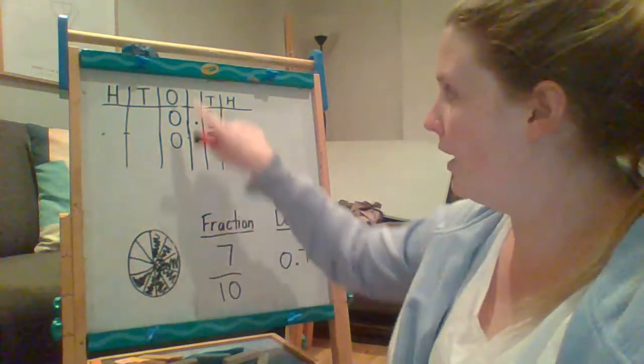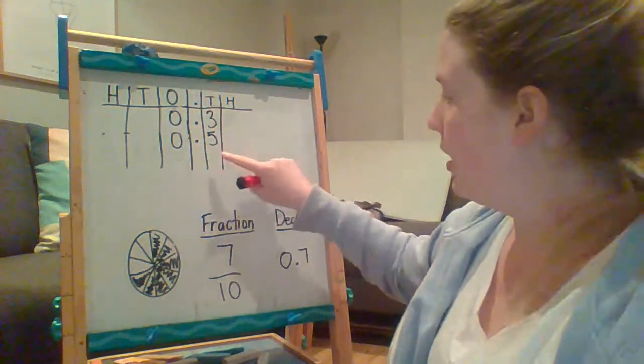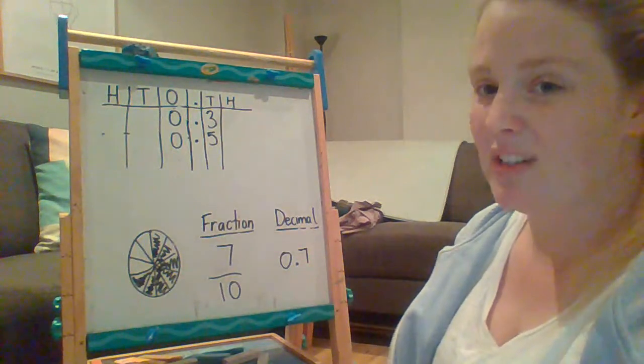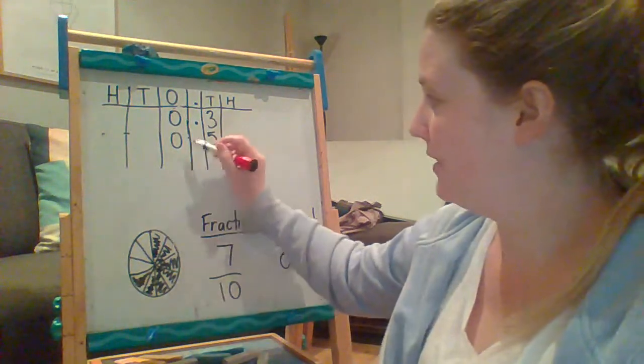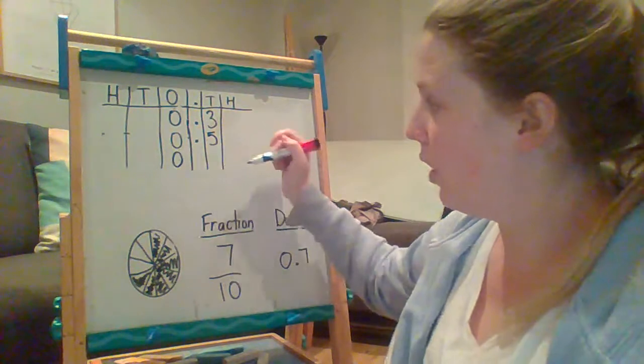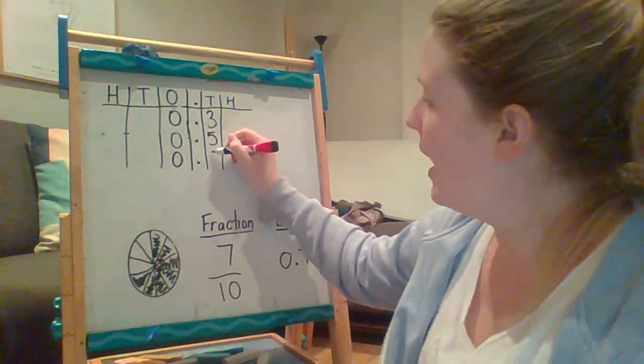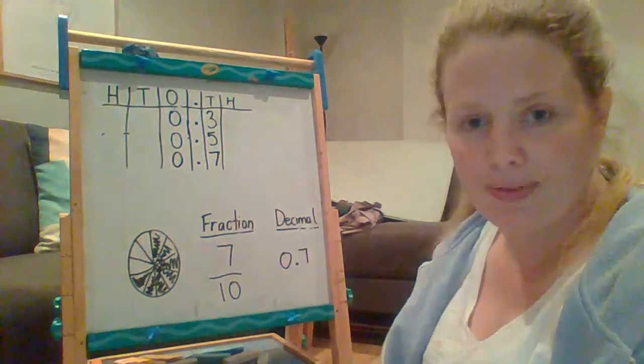So I don't have a whole one here, but I do have part of one. I've got seven tenths. So I've got zero wholes, the point, that's where that zero comes in, and then seven tenths.